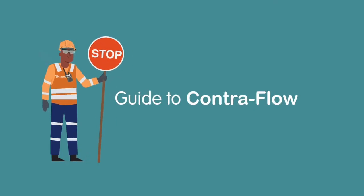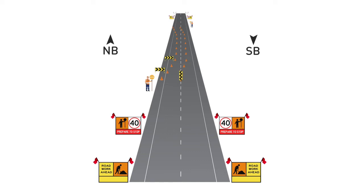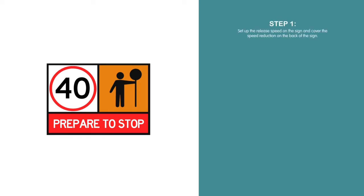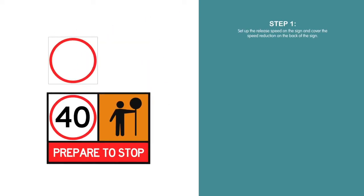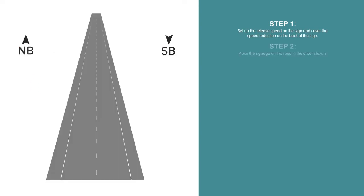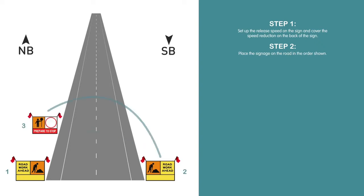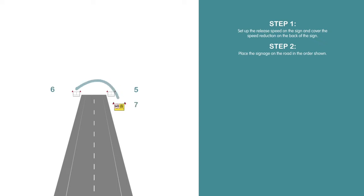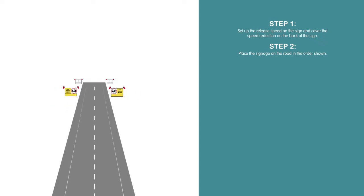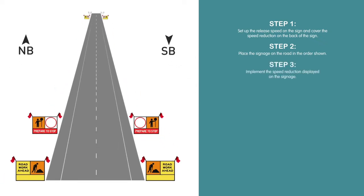A contraflow allows for two-way traffic operations in which one or more lanes are temporarily diverted or closed. Step 1: Set up the release speed on the sign and cover the speed reduction on the back of the sign. Step 2: Place the signage on the road in the order shown. Step 3: Implement the speed reduction displayed on the signage.